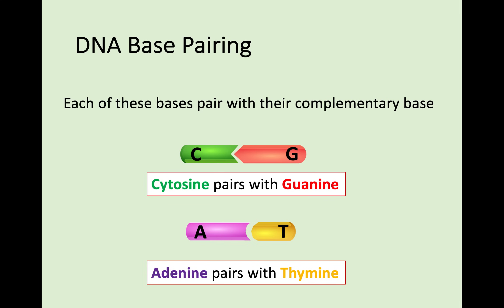Each of these bases pair with their complementary base, which means the one they match with. They don't match with any other. Cytosine pairs with guanine, and adenine pairs with thymine. Cytosine, for example, cannot pair with adenine or thymine. It can only pair with guanine. You need to know these off by heart. It's a very common exam question. The way I like to remember these is that C and G are both curved letters, so if you think the two curved letters match together, and A and T match together as well.